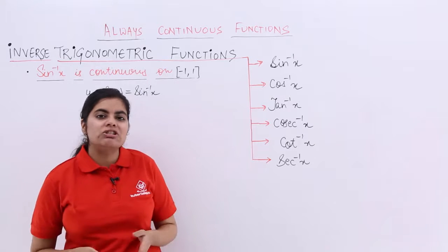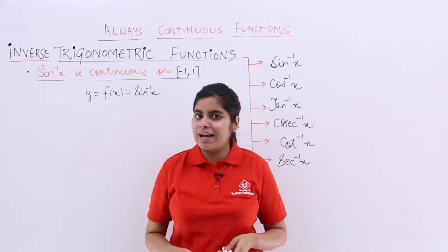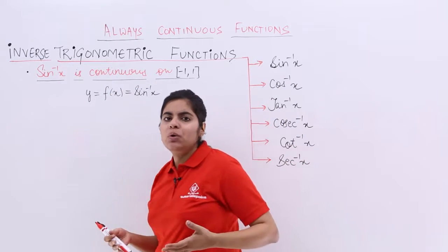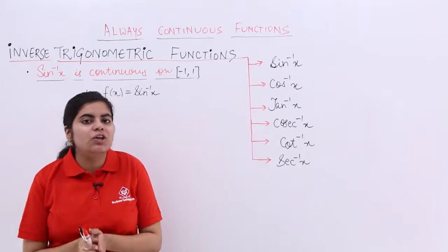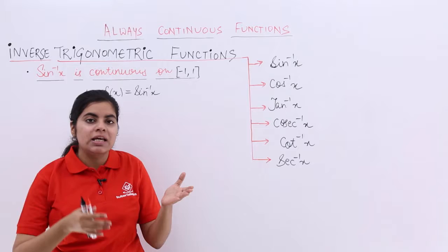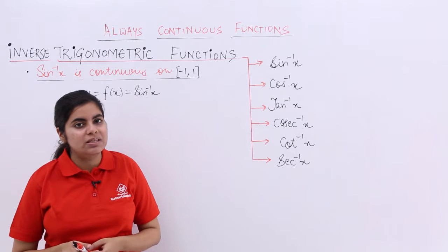In this video, let's talk about another category of always continuous functions and the category is named as inverse trigonometric function. We already know from the previous video that trigonometric functions are always continuous sine and cos, the rest 4 are always continuous in their respective domains.